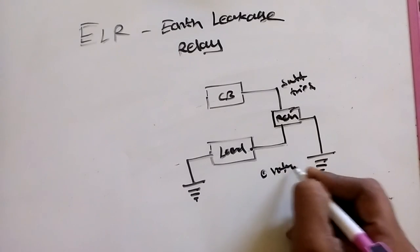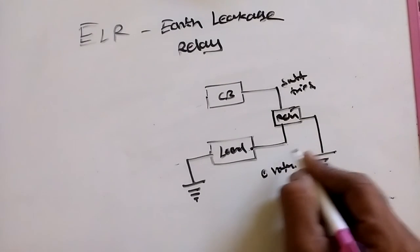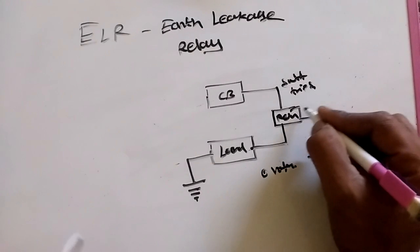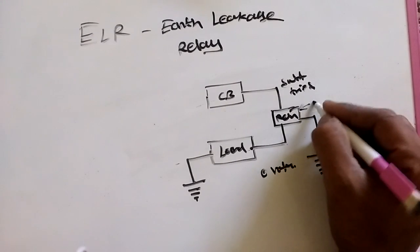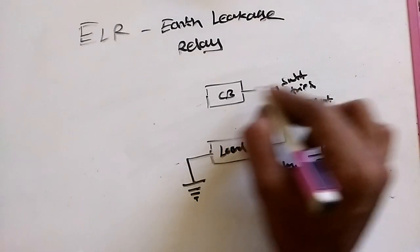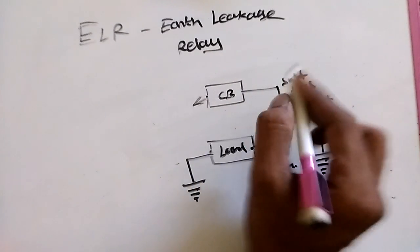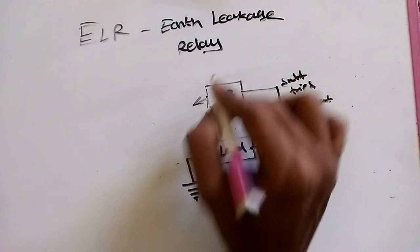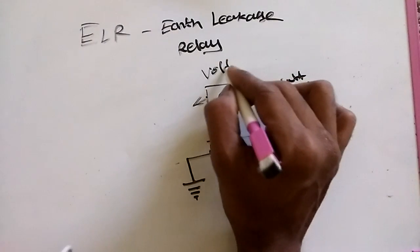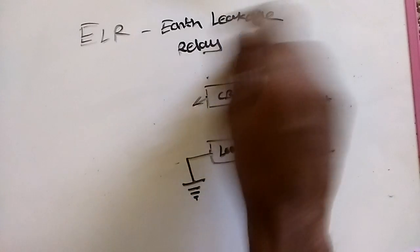If voltage is abnormal and rises, then the ELR relay sends a signal to the shunt trip. The shunt trip trips the circuit breaker, the main circuit breaker. This method is called voltage reference method. Next, we are going to see current reference method.